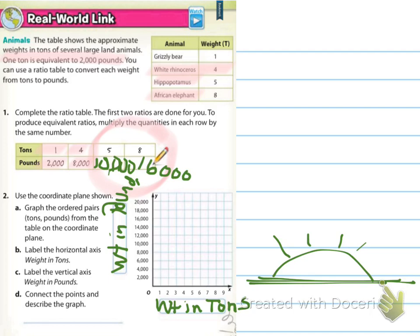Now it says to connect the points and describe the graph. For one ton it's going to be 2,000 pounds, for four tons it's 8,000 pounds, for five tons it's 10,000 pounds, and for eight tons it's 16,000 pounds. If you connect these, it should show as a straight line because for every one ton there's 2,000 pounds.